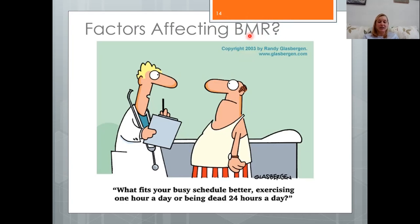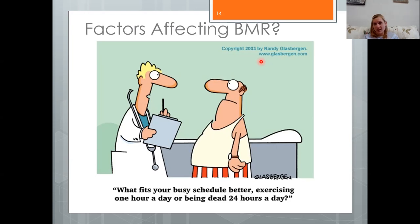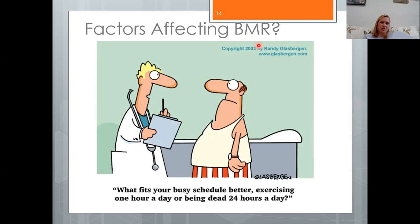Environmental conditions also affect BMR. Extremely hot or cold environments both tend to increase basal metabolic rate because the body must regulate temperature. A cold environment actually burns more calories than a hot one — in cold environments, shivering burns a significant amount of calories. Other factors affecting BMR include caffeine, drug use, tobacco, and pregnancy.